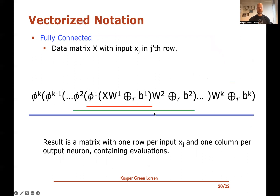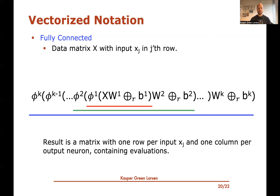You can stack all these operations together for the full data matrix: take the data matrix, multiply by W1, row-wise add B1, apply phi_1, then multiply by W2, row-wise add B2, apply phi_2, and so on. The final result is a matrix with one row per input feature vector and one column per output neuron, containing the output neuron's value on each input. This is batch evaluation of a fully connected feed-forward neural network using matrix multiplication, row-wise addition, and entry-wise activation functions.